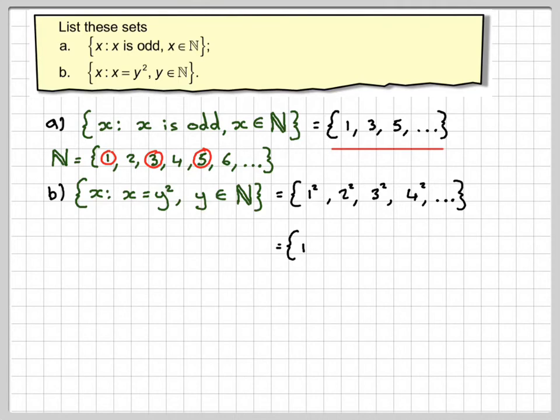1 squared is 1, 2 squared is 4, 3 squared is 9, 4 squared is 16, the next one will be 25, 36, and so on.